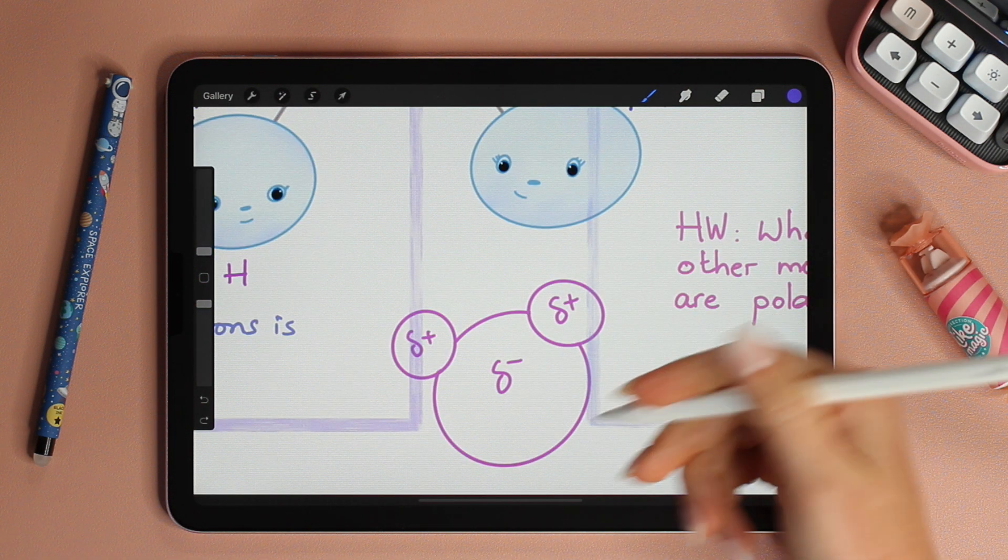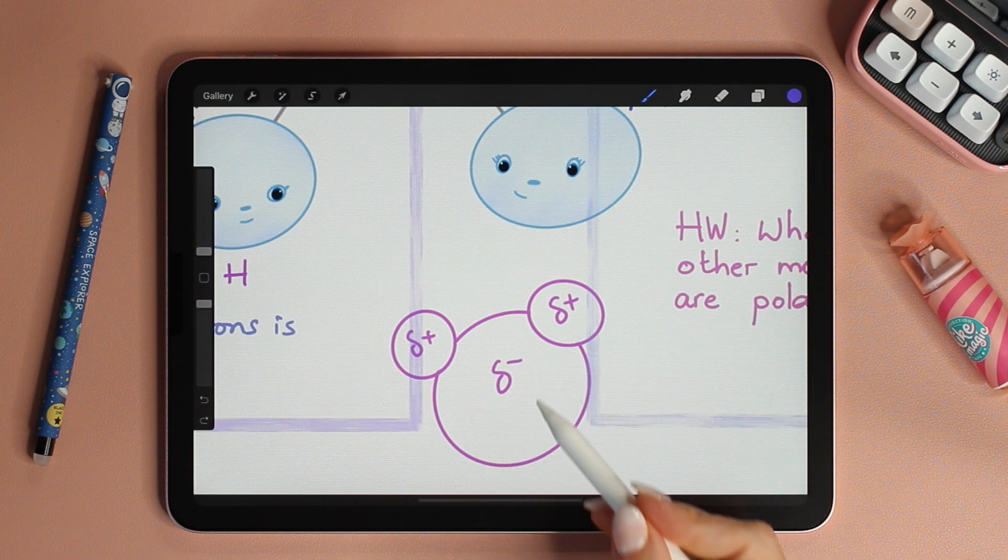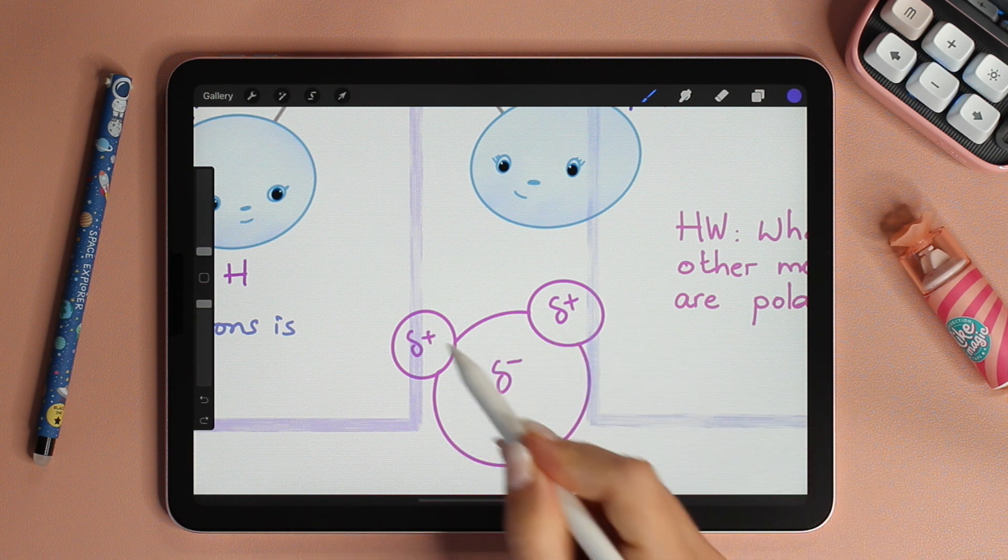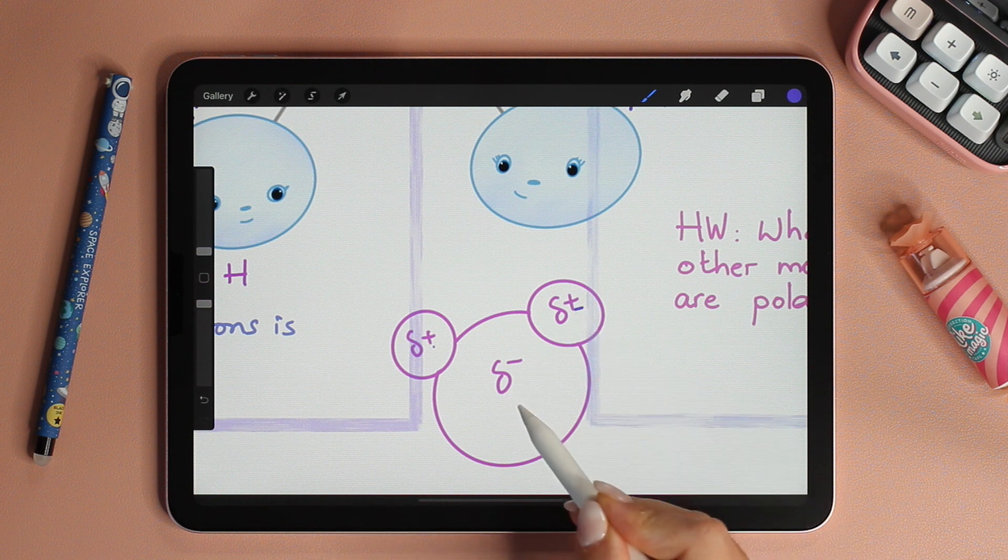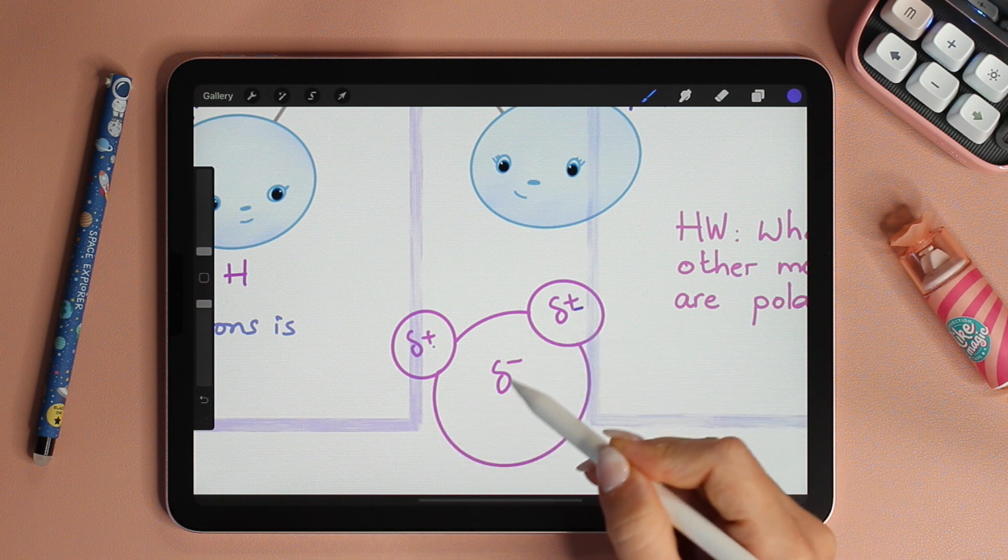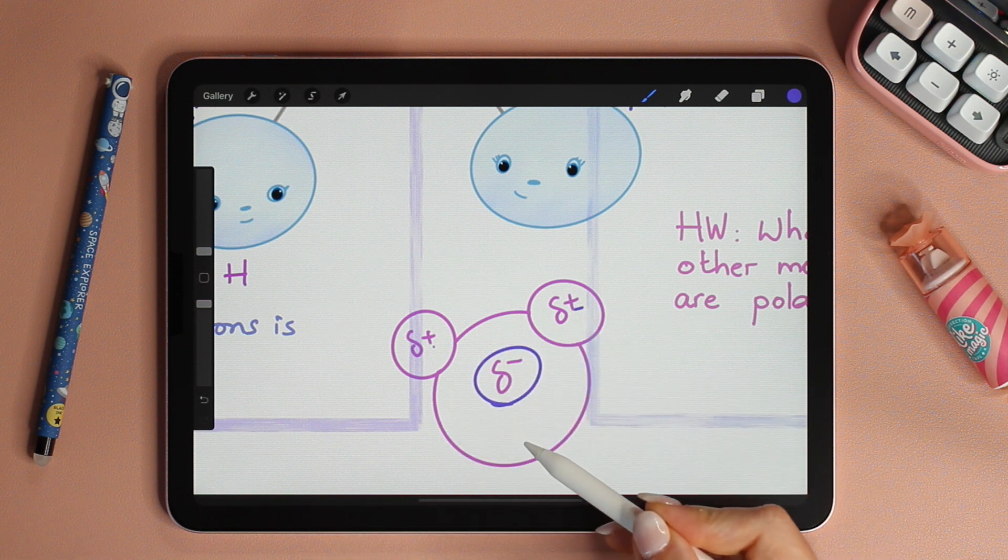In fact, the easiest way to draw the water molecule is a small mickey head where the ears are the hydrogen atoms delta positive and the face or the head is the oxygen delta negative.